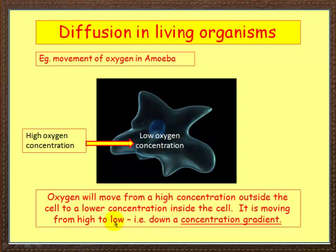This is a common feature of diffusion. Diffusion goes from a high concentration — it could be oxygen or any other particles — to a low concentration. Think of low as being the bottom of the gradient, and the particles are moving down the gradient from high to low.